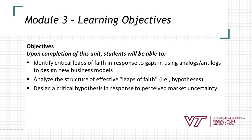Let's take a quick look at Module 3 and the learning objectives. The goal here is to look at critical leaps of faith, really in response to gaps, and using analogs and antilogs to design a new business model. As our author, Mr. Mullins, talks about, at some point we exhaust those. We can learn from other companies, but we can only get so far. The other part is to look at the structure of effective leaps of faith — more specifically, hypothesis. And as part of Module 3, you'll actually be designing a critical hypothesis in response to a perceived market uncertainty.